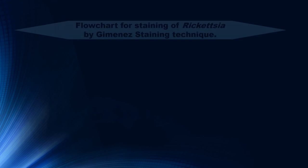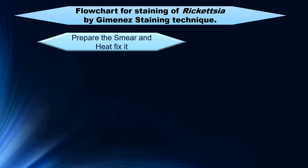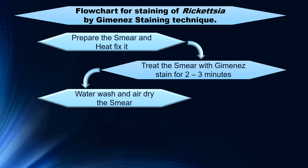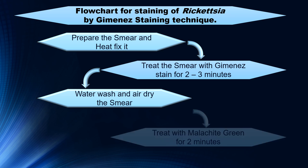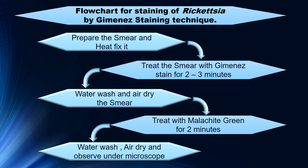Now let's see a flowchart of Rickettsia staining by the Gimenez staining technique. First, prepare a smear and heat fix it. Treat the smear with Gimenez stain for two to three minutes. Water wash and air dry the slide. Treat with malachite green for two minutes. Water wash, air dry, and observe under the microscope. This was the procedure of Rickettsia staining by the Gimenez method.